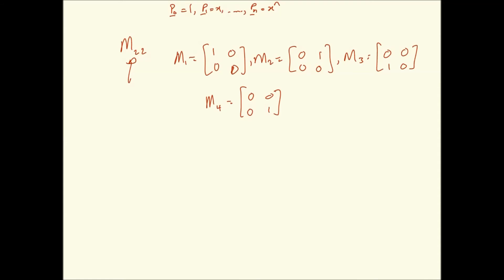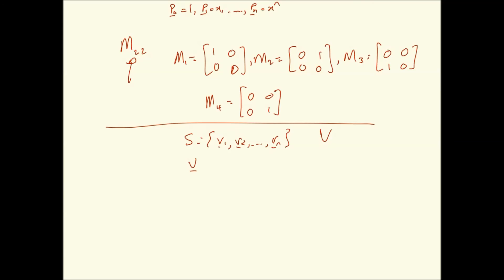There is a related concept called the coordinate vector of V relative to S. If S = {V1, V2, ..., VN} is a basis for vector space V, and U is a vector in V, then since V is spanned by S it is always possible to write U as a linear combination of these vectors: U = C1·V1 + C2·V2 + ... + CN·VN.